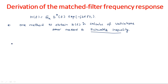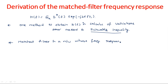So what do we mean by a matched filter? A matched filter is a filter — or network — whose frequency response improves the signal-to-noise ratio, specifically the peak signal to mean noise ratio.